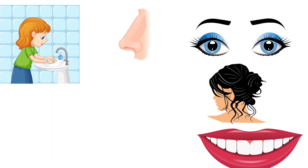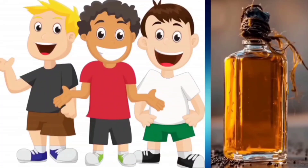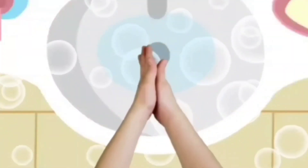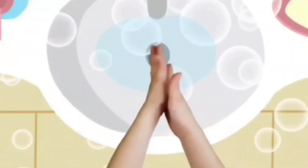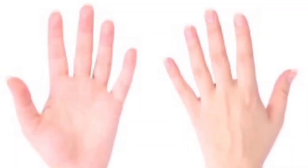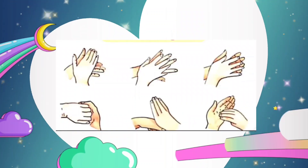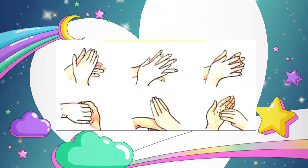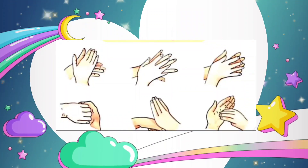Come on kids, let's do an activity. I will put a drop of oil on your hands. You have to wash your hands first with water, then you have to wash your hands with soap. And we will see how clean the hands are. It is important to wash your hands thoroughly to get rid of dirt and germs.